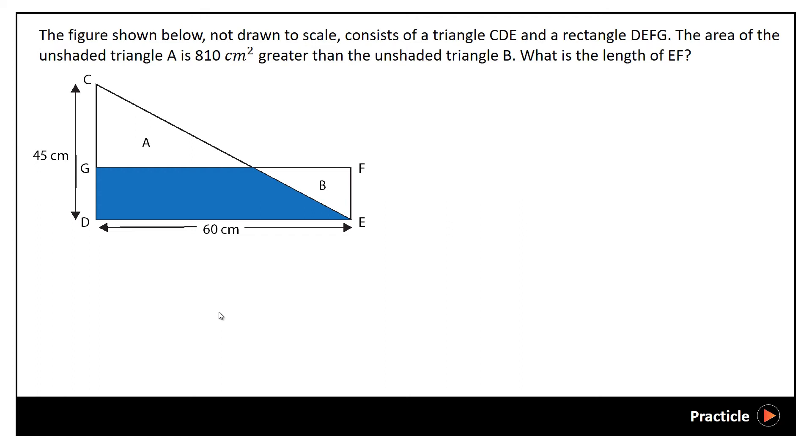Hi guys, so let's look at this question today. The figure shown below, not drawn to scale, consists of a triangle CDE and a rectangle DEFG. So here we have triangle CDE and then we have rectangle DFG. Next, we are given that the area of the unshaded triangle A is actually 810 square centimeters greater than the unshaded triangle B.